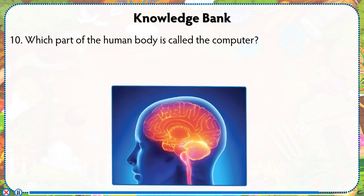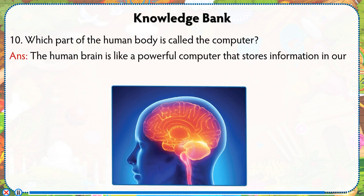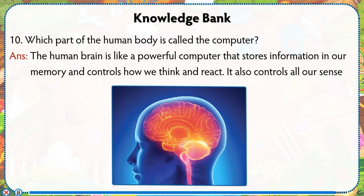Which part of the human body is called the computer? The human brain is like a powerful computer that stores information in our memory and controls how we think and react. It also controls all our sense organs.